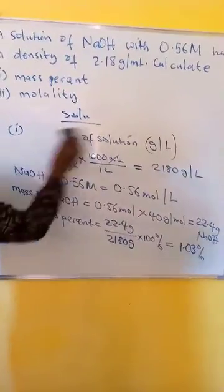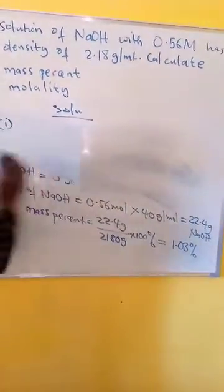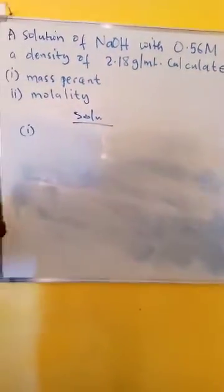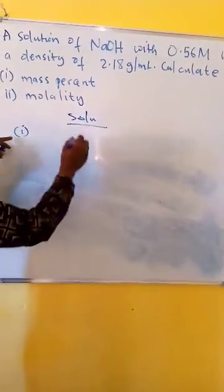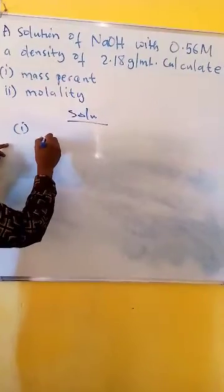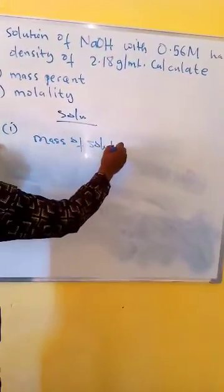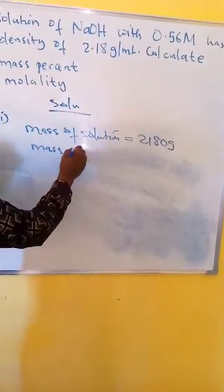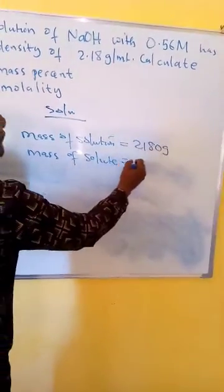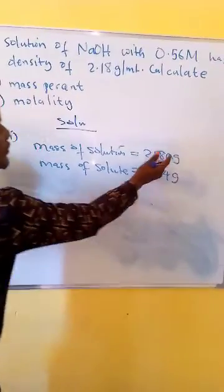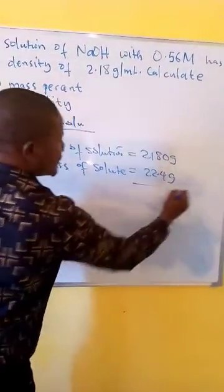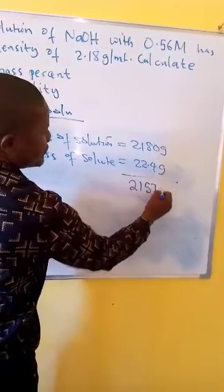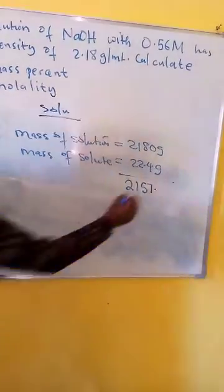Now let's calculate the molality of sodium hydroxide. We need to find the mass of the solvent, which is water. The mass of solution is 2180 grams, and the mass of solute is 22.4 grams. The difference gives us the mass of water, which is 2157.6 grams of water.